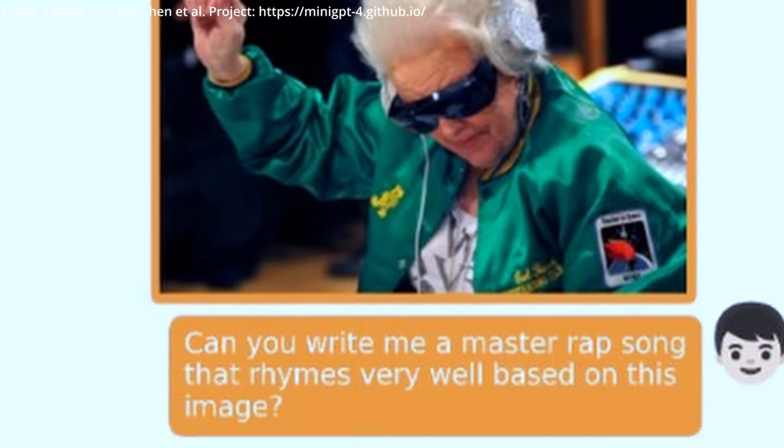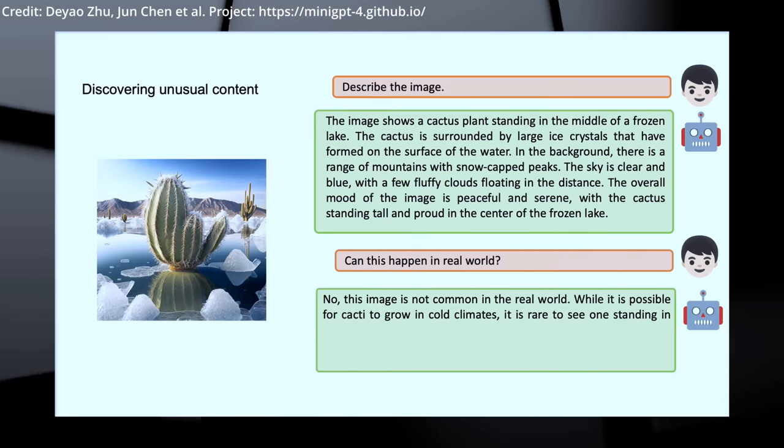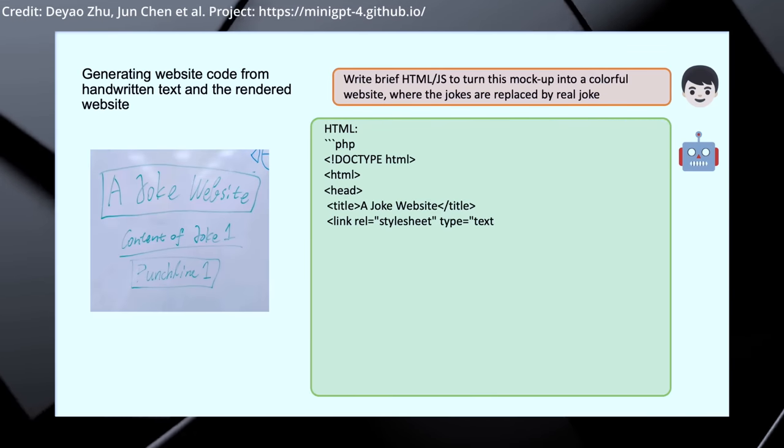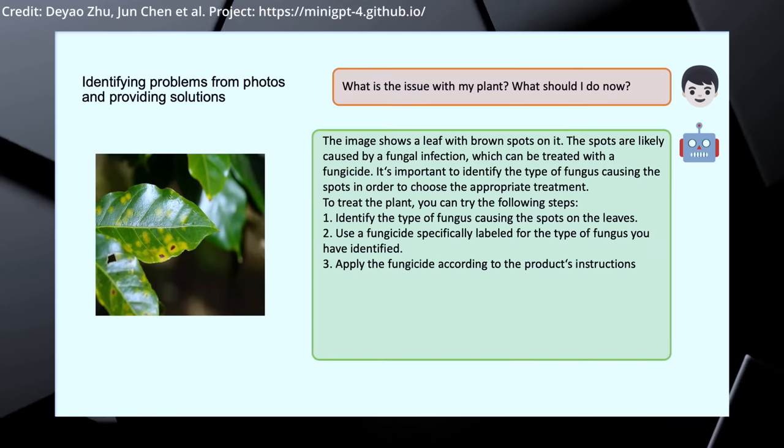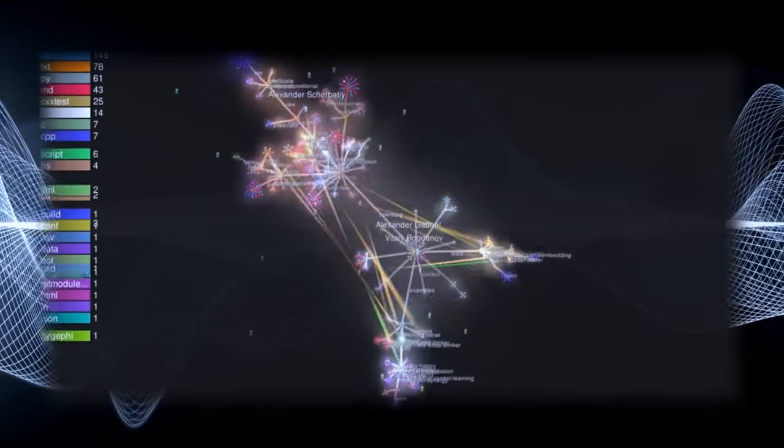Mini-GPT4's base capabilities are impressive, doing much more than simply describing what it's seeing, even being able to create apps from handwritten sketches and explain visual abnormalities. However, it's the emerging abilities of the model that truly set it apart.